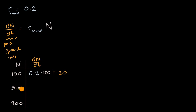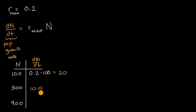When our population is 500, we take our maximum per capita growth rate and multiply it by our population: 0.2 times 500 gives a population growth rate of 100 — that's 100 bunnies per year, or 100 individuals per year. And when our population is 900, it is 0.2 times 900, so it is going to be 180 individuals per year.